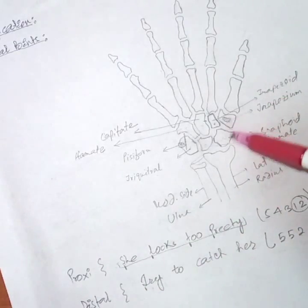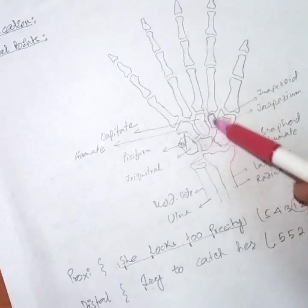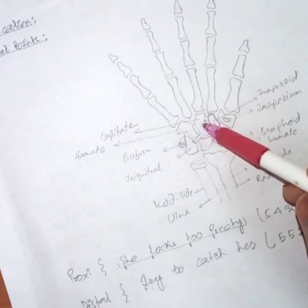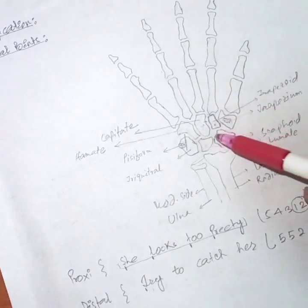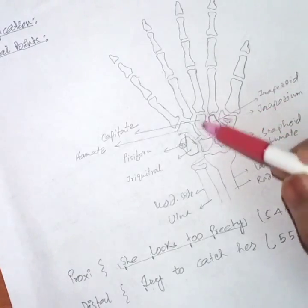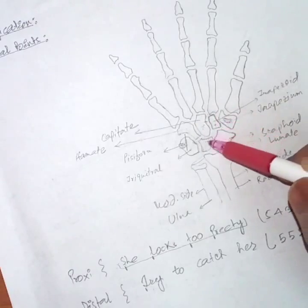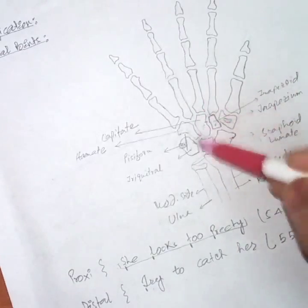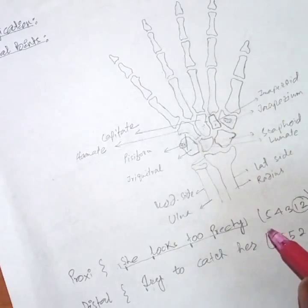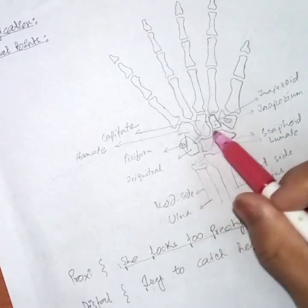Regarding articulation — taking the capitate bone as an example — if we have a diagram in front of us, it is easy to count how many bones are articulated with a particular bone. For the capitate, there are approximately five or six surrounding bones. It is not a very difficult task to identify how many bones surround a particular carpal bone.